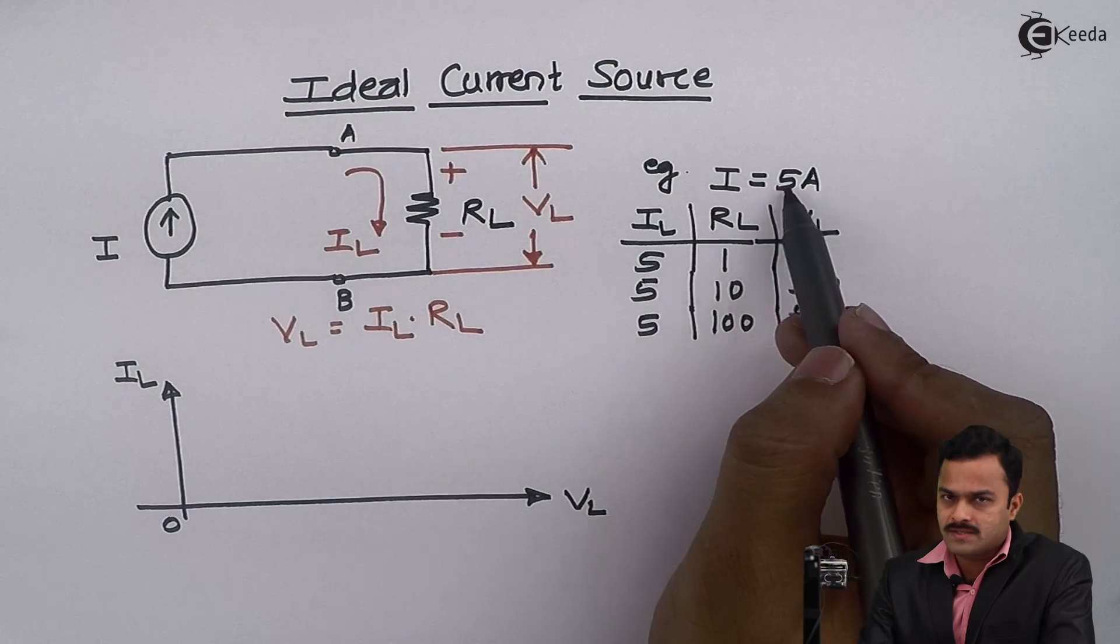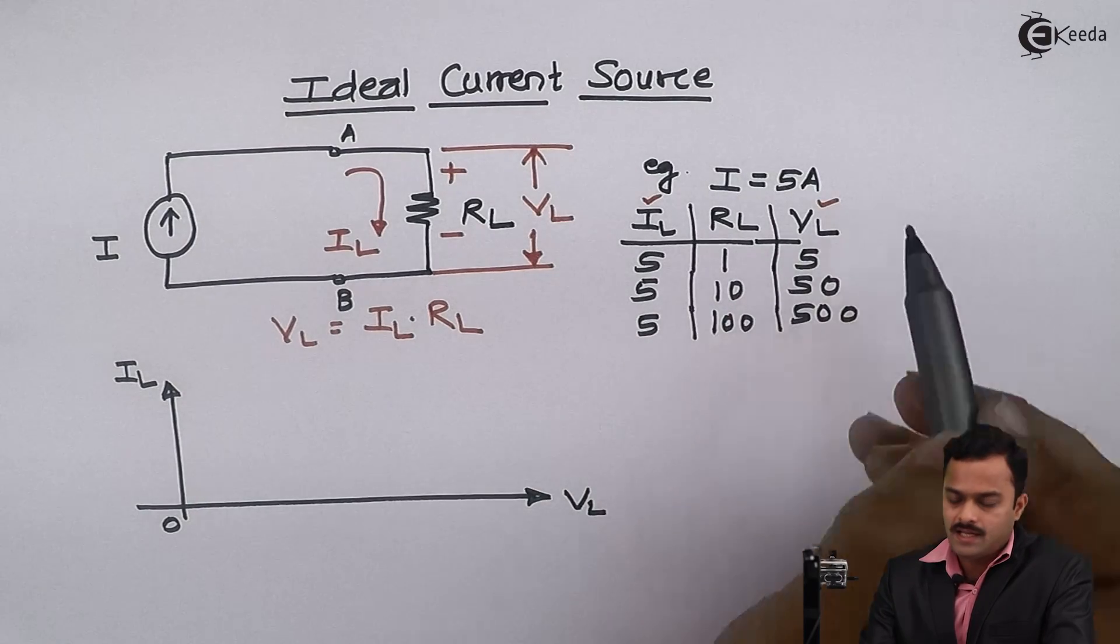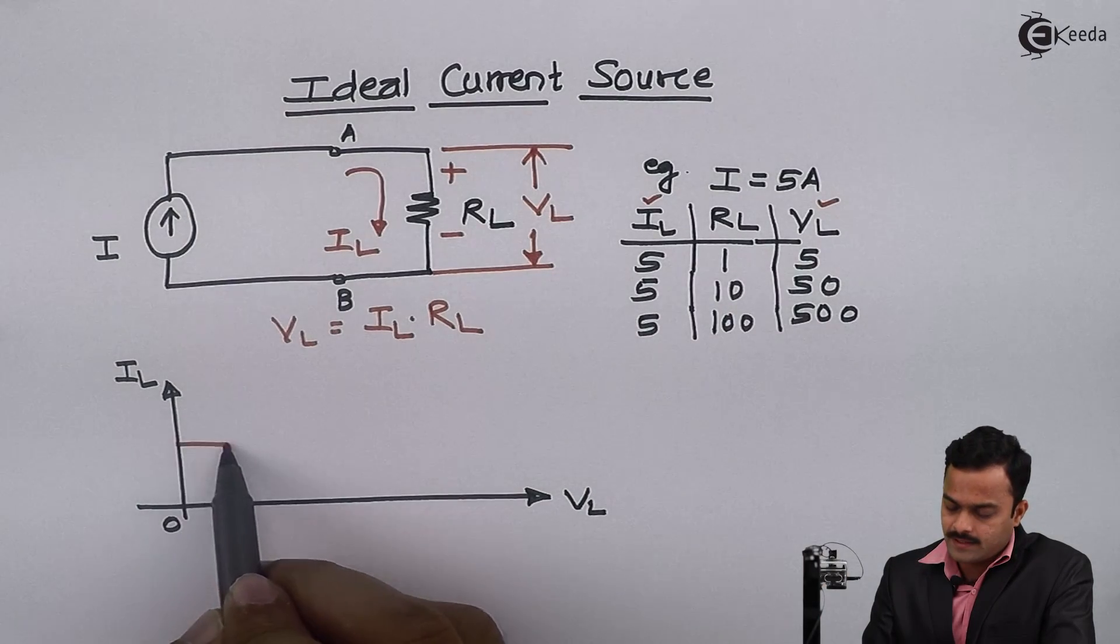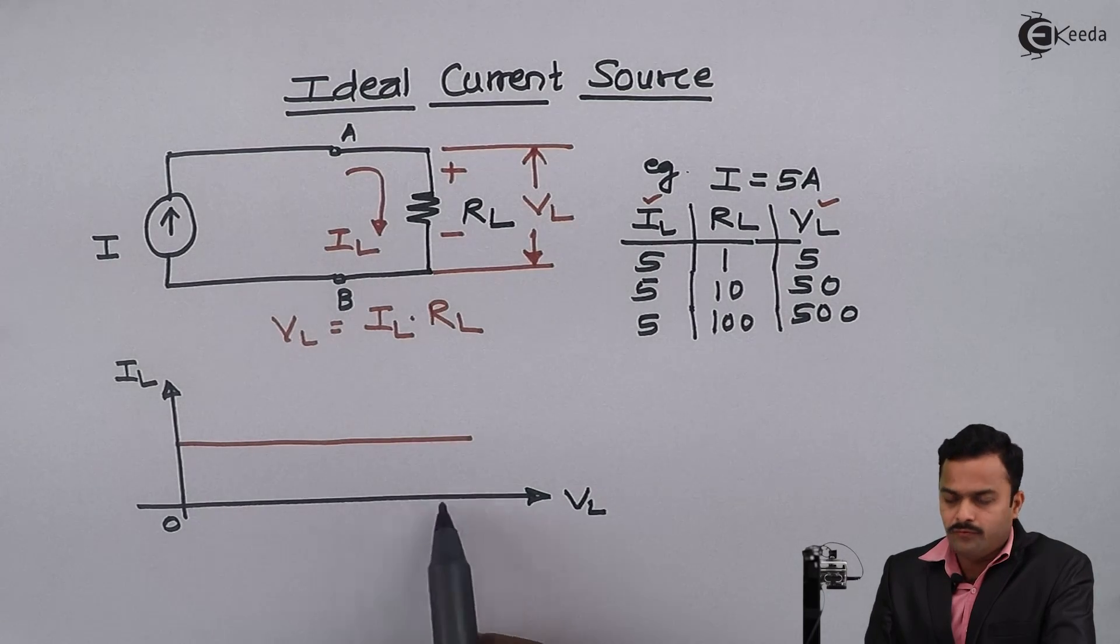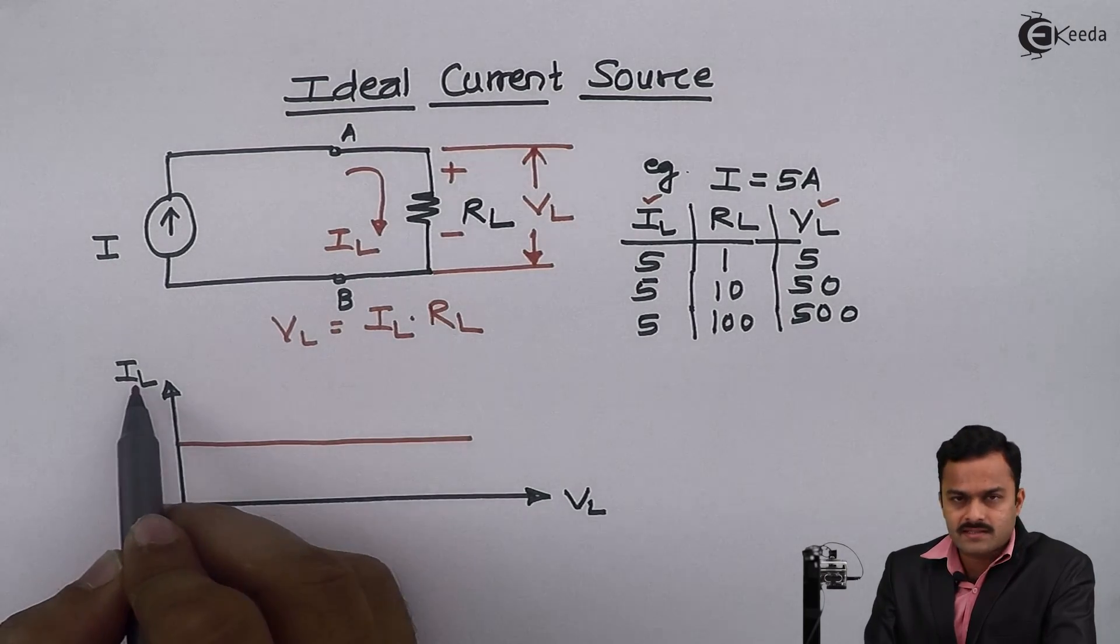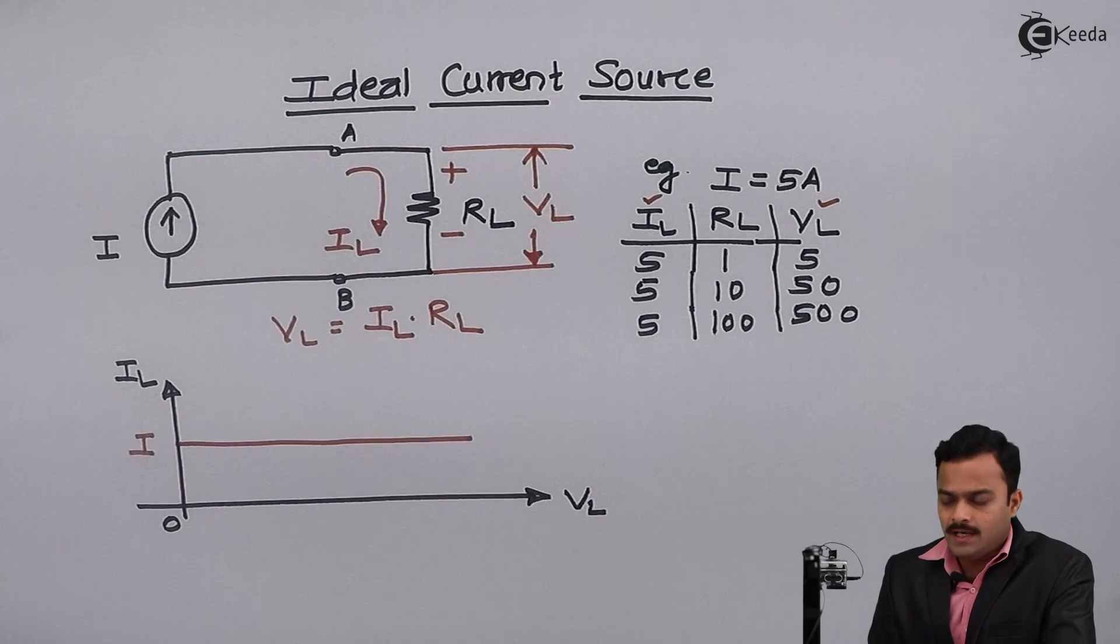So if I draw the graph of IL and VL, I will get a straight line like this. Irrespective of any value of VL, I will get fixed IL decided by I.